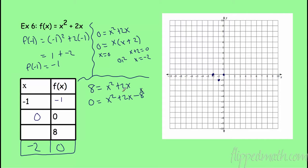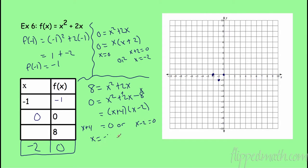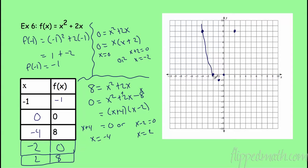Now solve f(x) = 8: 8 = x² + 2x, so 0 = x² + 2x - 8. We need numbers that multiply to -8 and add to 2: that's 4 and -2. So (x + 4)(x - 2) = 0, giving x = -4 or x = 2. Plot (-4, 8) and (2, 8). This graph is a parabola — a U-shaped figure, even if my drawing doesn't show it perfectly.